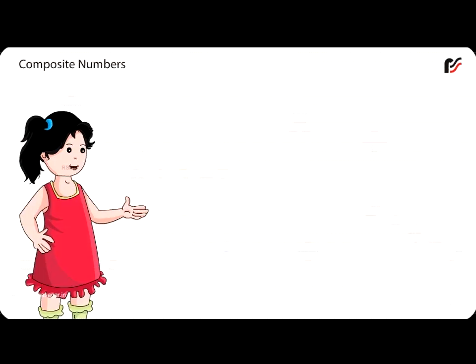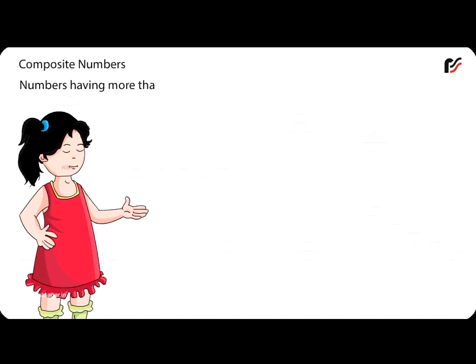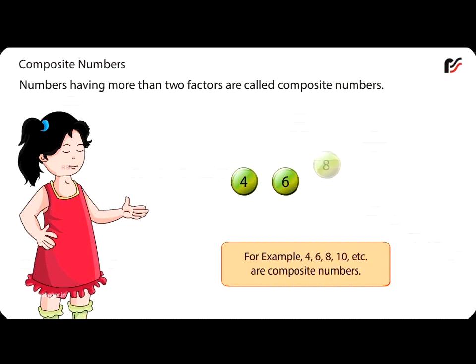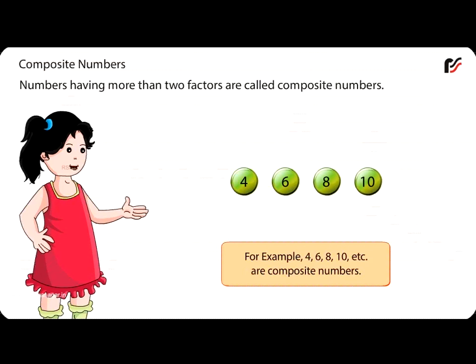Composite Numbers: Numbers having more than 2 factors are called composite numbers. For example, 4, 6, 8, 10, etc. are composite numbers.